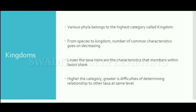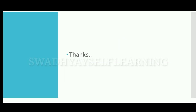Various phyla belong to the highest category called kingdom. From species to kingdom, the number of common characteristics goes on decreasing. Lower the taxa, more are the characteristics that members within a taxon share. Higher the category, greater is the difficulty of determining relationships with other taxa at the same level.